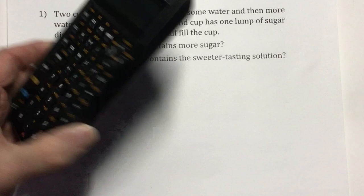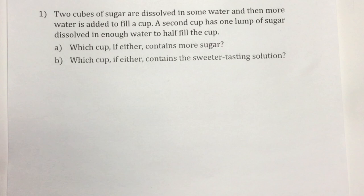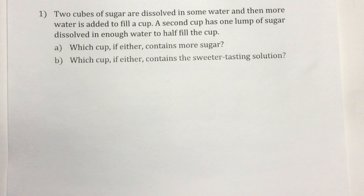Number one: two cubes of sugar are dissolved in some water, and then more water is added to fill a cup. A second cup has one lump of sugar dissolved in enough water to half fill the cup. Question A: which cup, if either, contains more sugar?